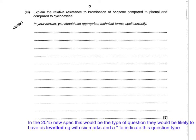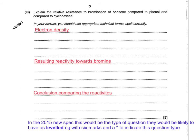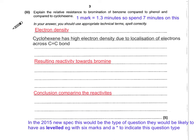Let's think about what we need to say. I've split my answer into three sections to think clearly about what part I'm going to address at each point. Because it's 5 marks, and the mark-to-time ratio is about 1 mark to 1.3 minutes, you can safely spend 7 minutes on this — including thinking time to plan your answer before writing. In no particular order, I'll talk about cyclohexene first: it has high electron density due to localisation of electrons across the carbon-carbon bond, which allows it to react readily with bromine without a halogen carrier.